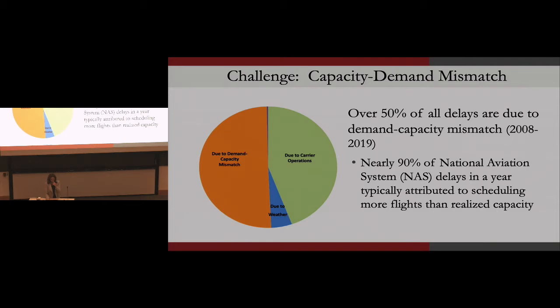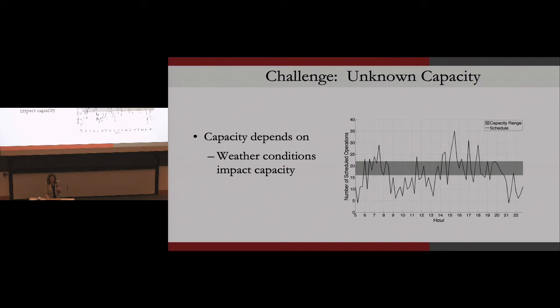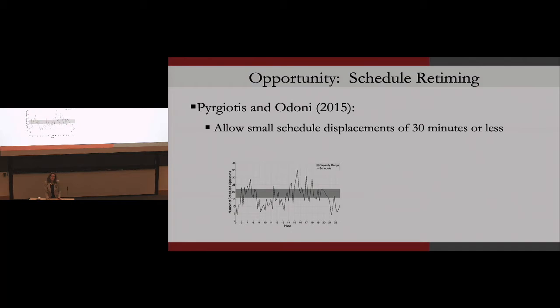There's one more challenge with capacity: we don't actually know the capacity at airports a priori, because capacity depends on weather conditions. If it's foggy in San Francisco, capacity will be reduced by about half. You have to shut down certain runways when it's windy, and separation between planes when visibility is poor has to be greater than when you can see clearly. So the capacity complicates planning — we don't actually know ahead of time how much capacity we'll have.